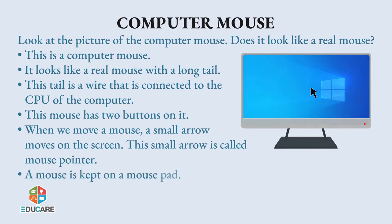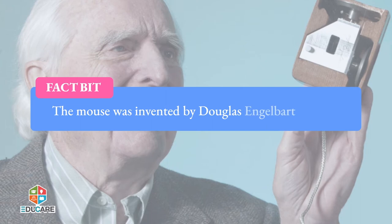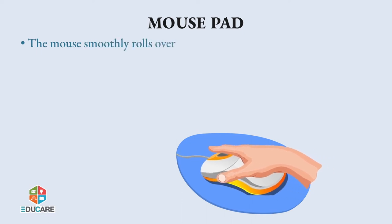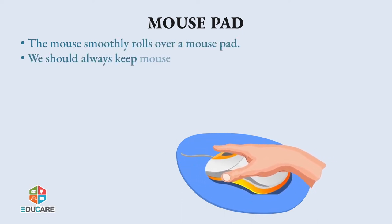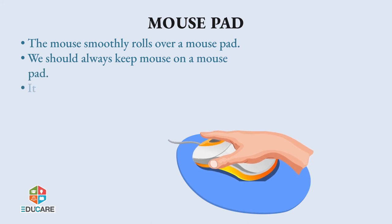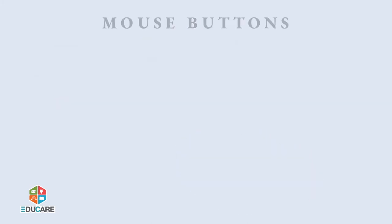A mouse is kept on a mouse pad. Fact bit: The mouse was invented by Douglas Engelbart in 1963. Mouse pad: The mouse smoothly rolls over a mouse pad. We should always keep the mouse on a mouse pad. It keeps the mouse dust free.